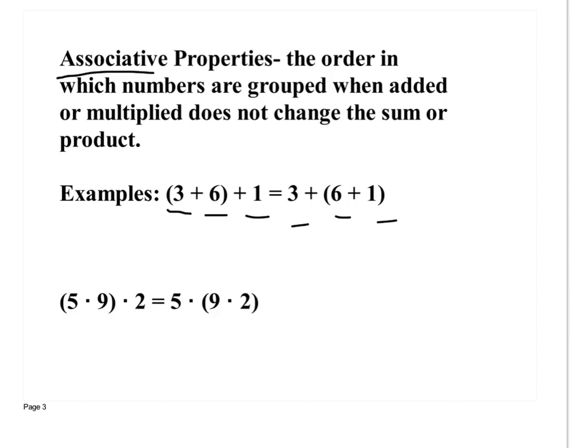Commutative: 'co' means change order — that's how you memorize commutative. For associative, think 'associations.' What's another word for associations? Group. If you change the association, you're changing your group. People you associate with are people you group with. So when the grouping is changed, that's associative property. Commutative = 'co'; associative = 'association.'